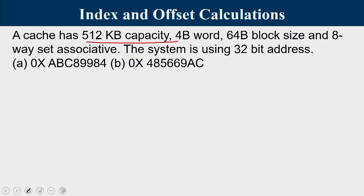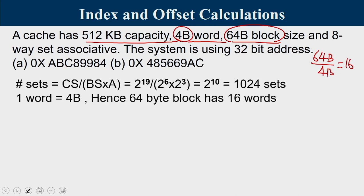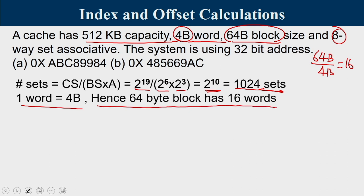The cache is 512KB with 4-byte words and 64-byte blocks, 8-way associative. With 64-byte blocks and 4-byte words, there are 16 words per block. Number of sets = cache size / (block size × associativity) = 2^19 / (2^6 × 2^3) = 2^10 = 1024 sets. Since there are 1024 = 2^10 sets, 10 bits are used for the index.